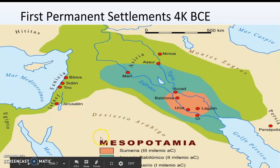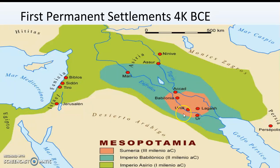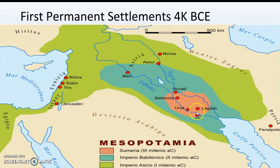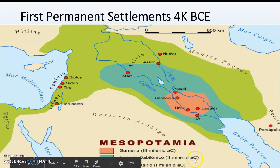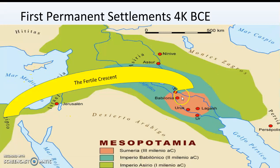The first permanent settlements are in Mesopotamia. This map shows exactly where people first started living — in this pink area between two rivers that lead to the ocean. Being near rivers is important because your farms need water, and rivers are also the first roads — it's much cheaper and easier to move things by boat than by wheel, so people could trade up and down these rivers. This area is called the Fertile Crescent — fertile because it's easy to grow crops, and crescent-shaped.